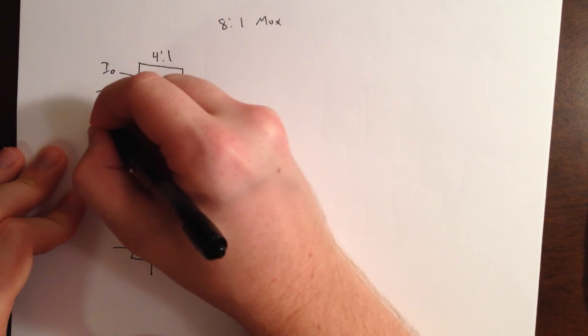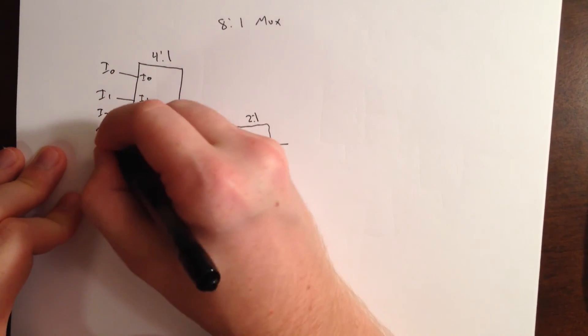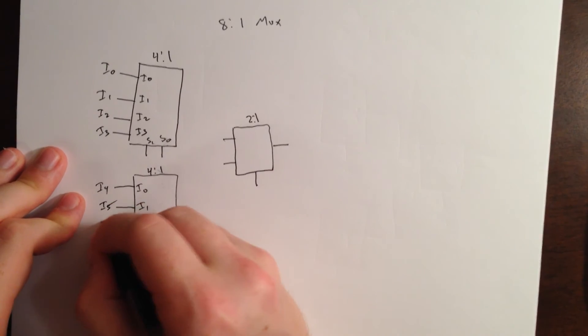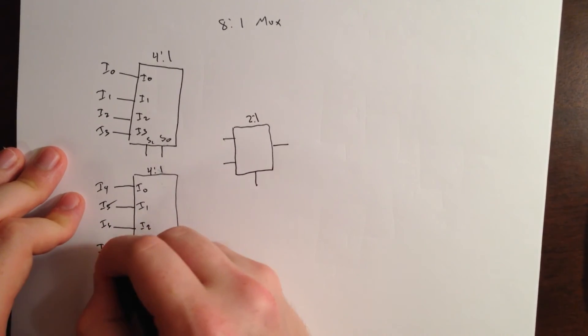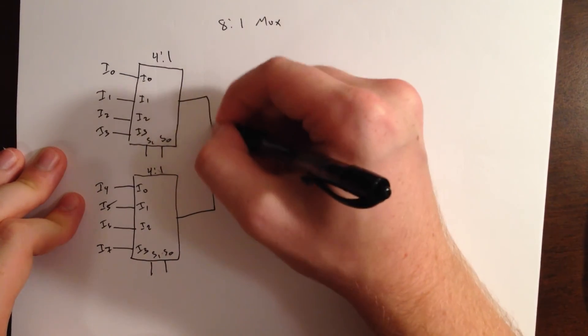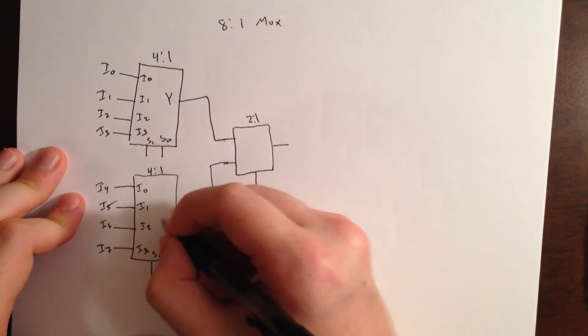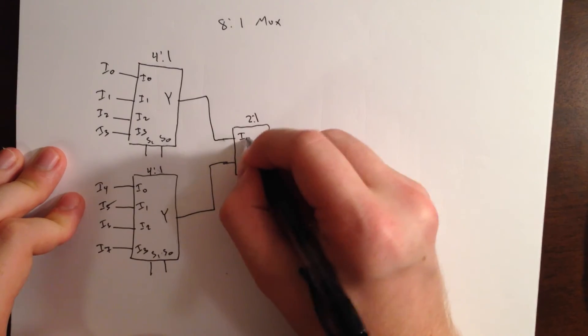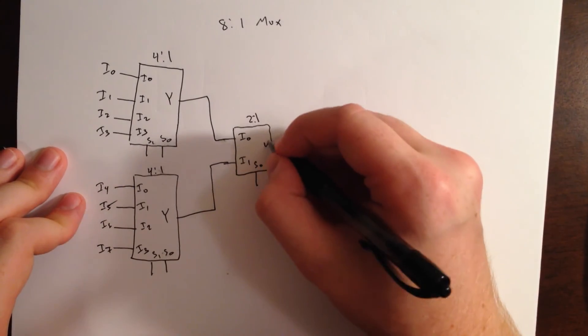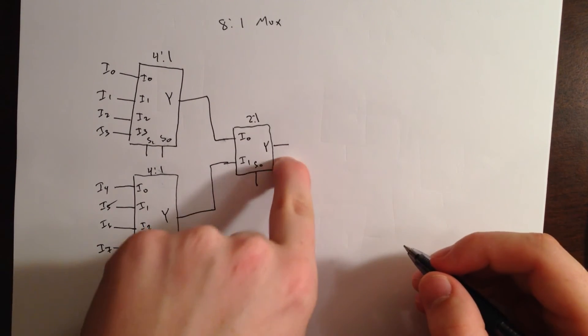And I0, I1, I2, I3, and then I4, I5, I6, I7. And, then we will connect our outputs, Y, to I0 and I1 of the 2:1 multiplexor, to our second output, Y.